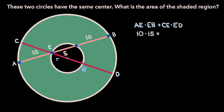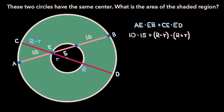If we consider line segment CE, its length is just the radius of the outer circle, uppercase R, minus the radius of the inner circle, lowercase r. So now if we return to our equation based on the chord-chord theorem, the right-hand side is going to be CE, which is uppercase R minus lowercase r, times ED, which is uppercase R plus lowercase r. On the left-hand side, 10 times 15 is 150, and if we multiply out the right-hand side, we get uppercase R squared minus lowercase r squared.